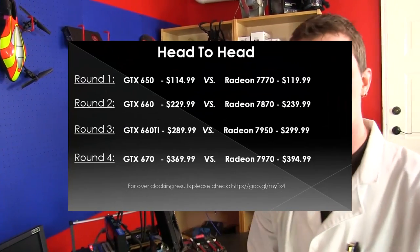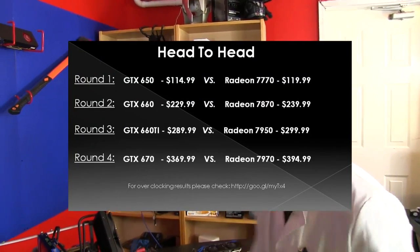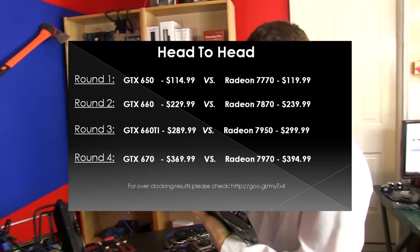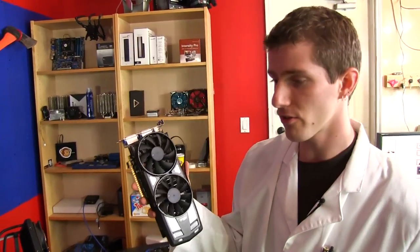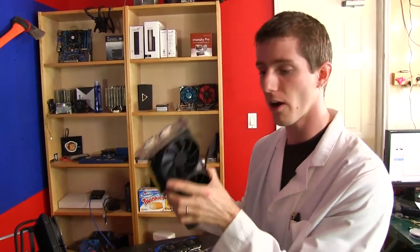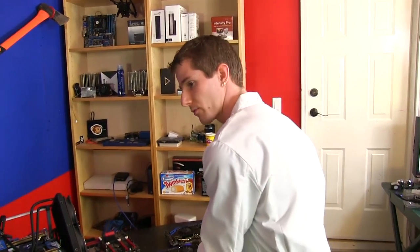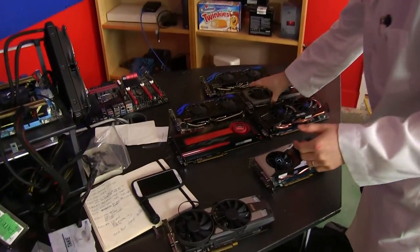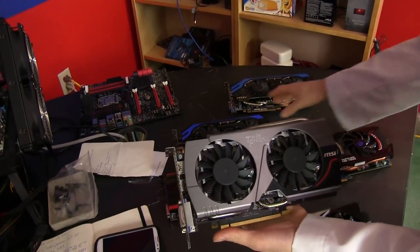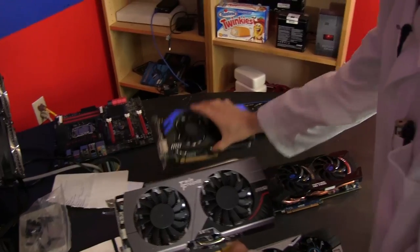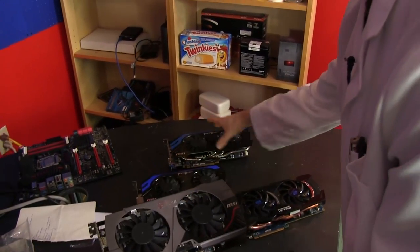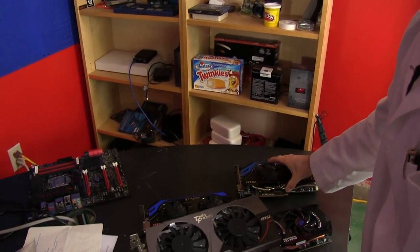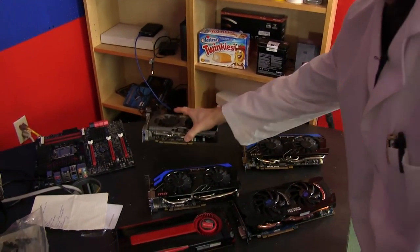Now, here are our price ranges. Head-to-head for round one is the GTX 650, this guy right here, the 650 Power Edition from MSI versus a Radeon 7770. These are $115 and $120 respectively. We also went for GTX 660, which is this guy right here, versus Radeon 7870, which is one of these two. I believe it's this guy right here. Those are $229 and $239 respectively.